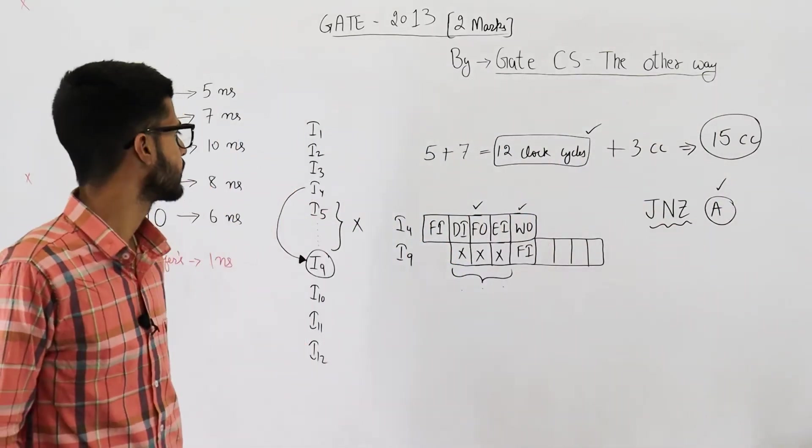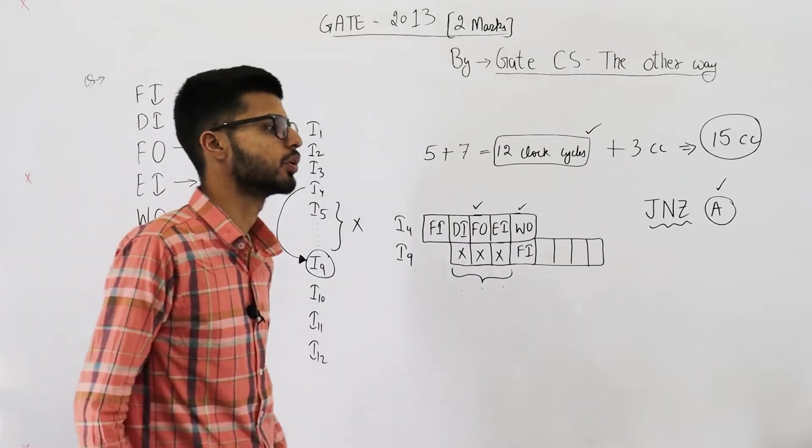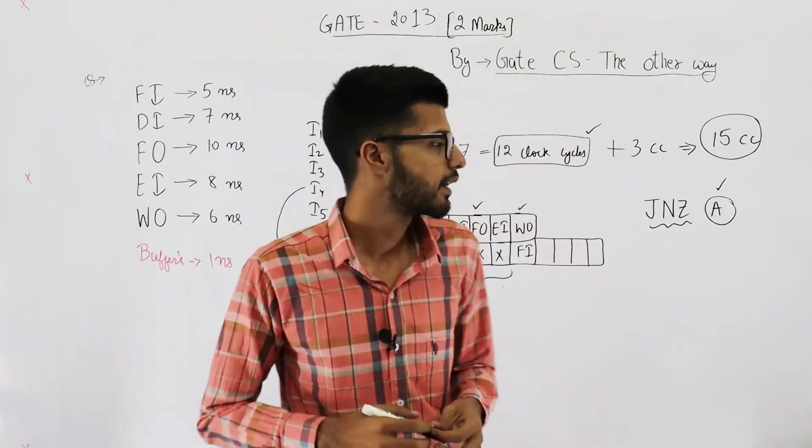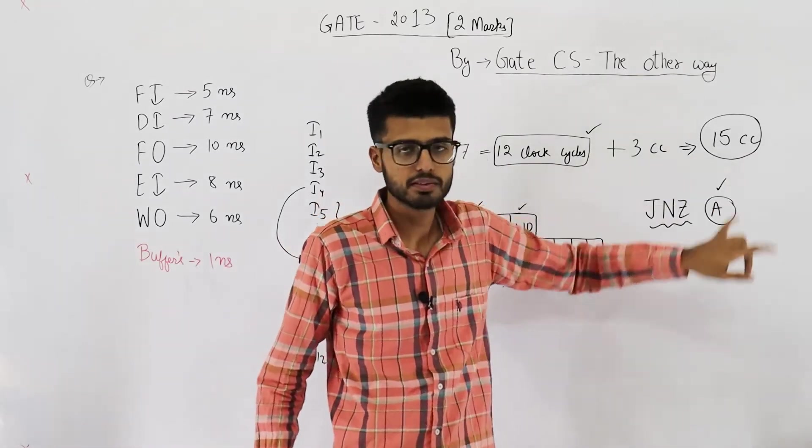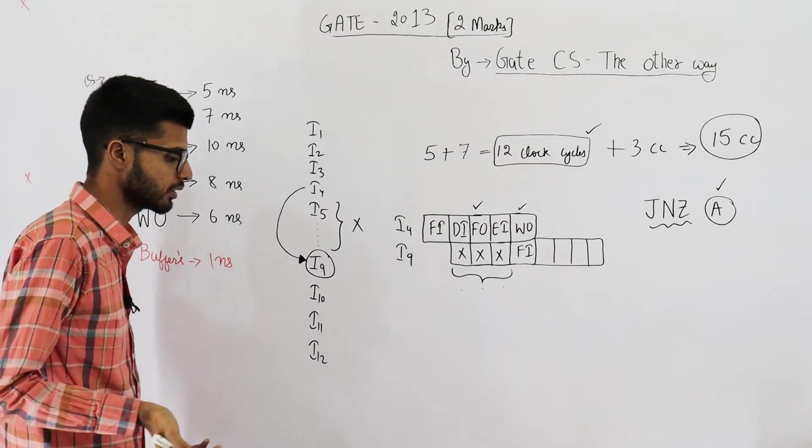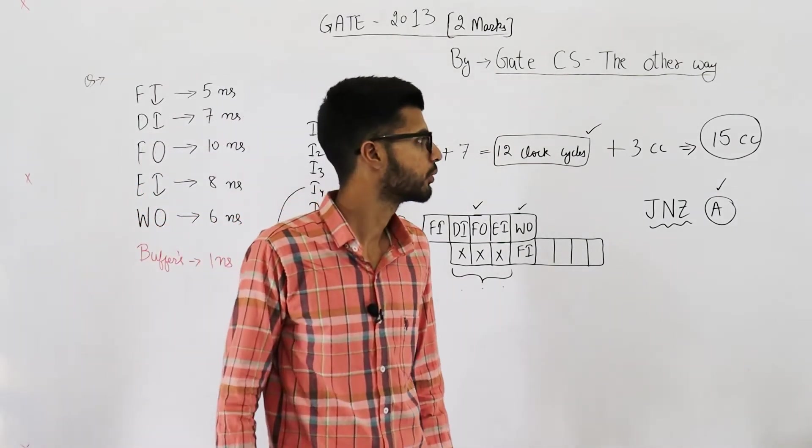Till now we have calculated that this program is going to take 15 clock cycles. Now if we know that how much time one clock cycle takes, we can simply multiply it by 15 and calculate the total time required by this program.